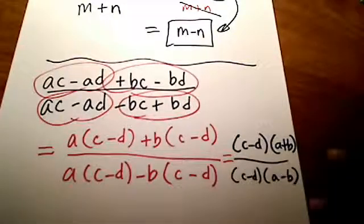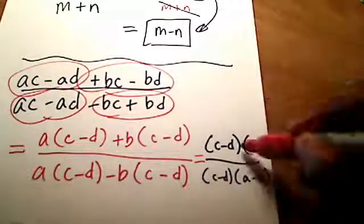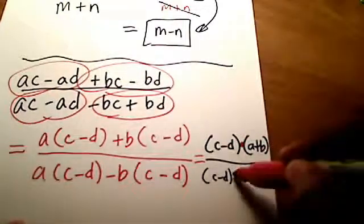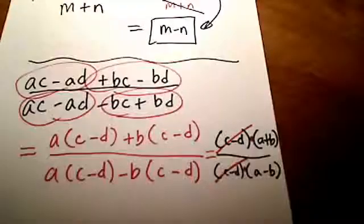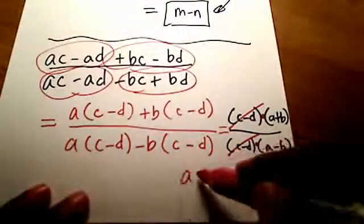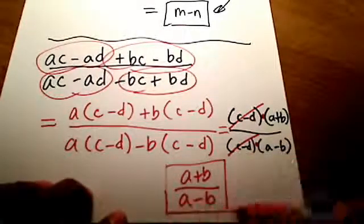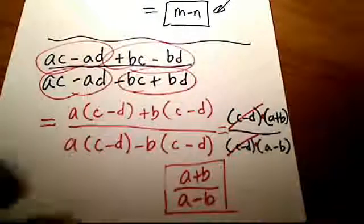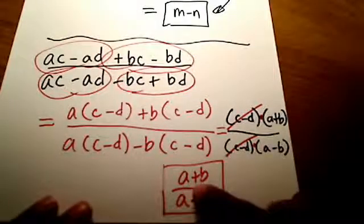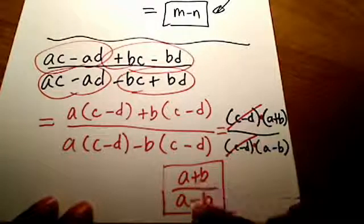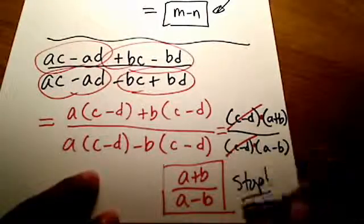Now I've got everything in a form where multiplication is going on up top: C minus D times (A plus B), and C minus D times (A minus B) on the bottom. That's what allows me to cross out the C minus D's. My final answer is A plus B over A minus B. Stop right there — don't go further. I know students are tempted to cross out the A's, but you can only cross things out if multiplication is going on. That's addition and subtraction up there — you can't do it. This is our final answer.